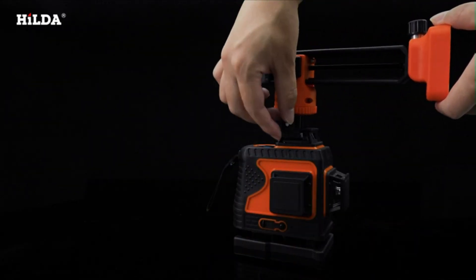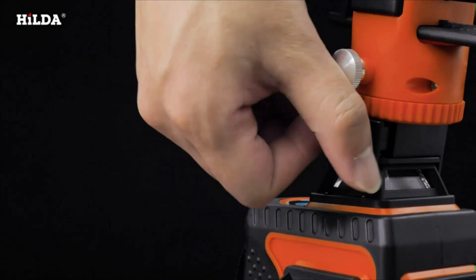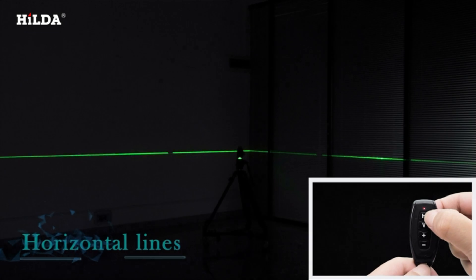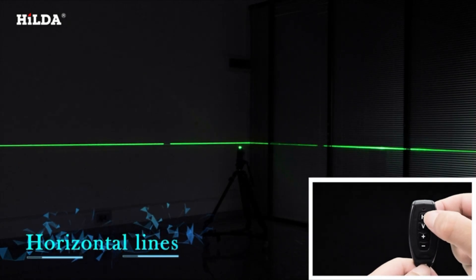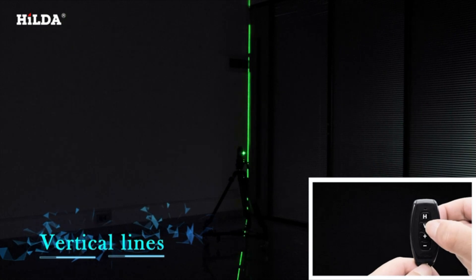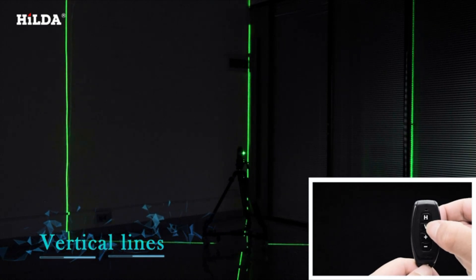The IP54 waterproof design protects the level from water splash, dust and construction waste and can adapt to the construction environment. The remote control can control the horizontal line and vertical line of the level and can also change the thickness of the laser line so that you don't have to go to the laser level beside to change, making your work easier.